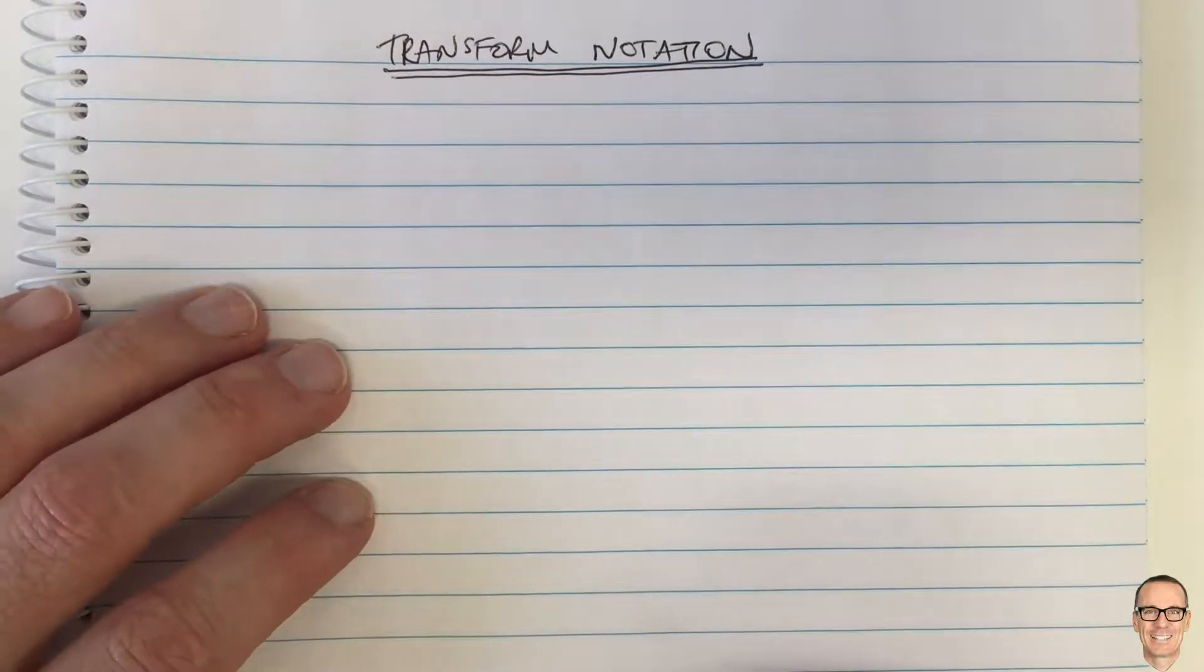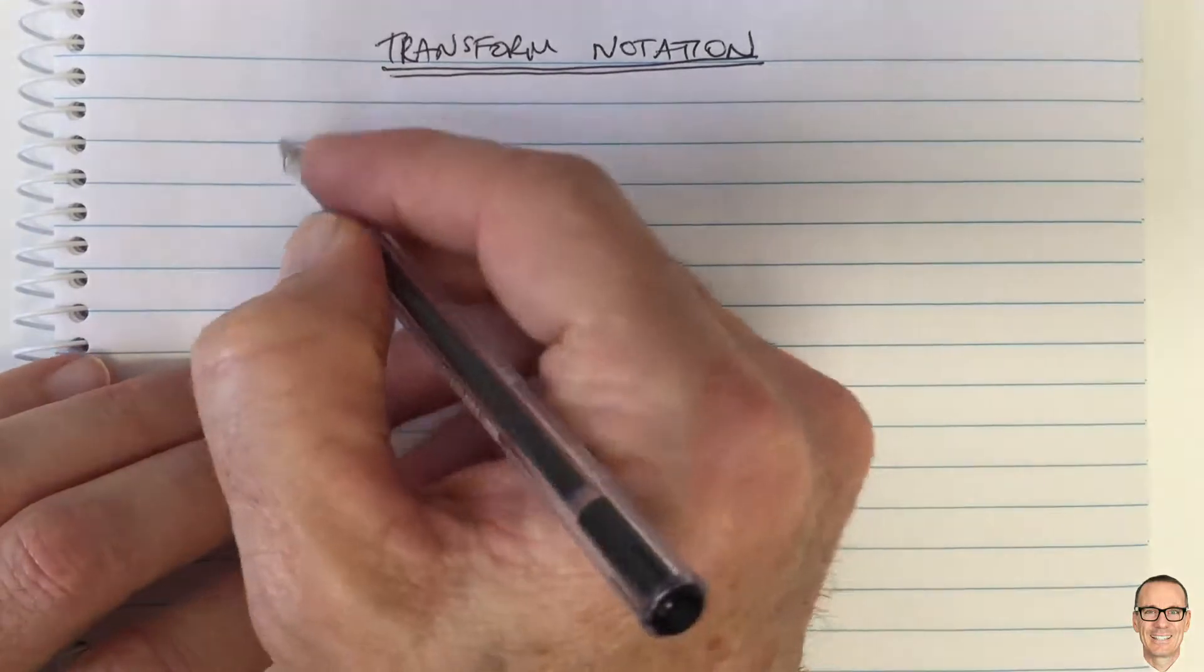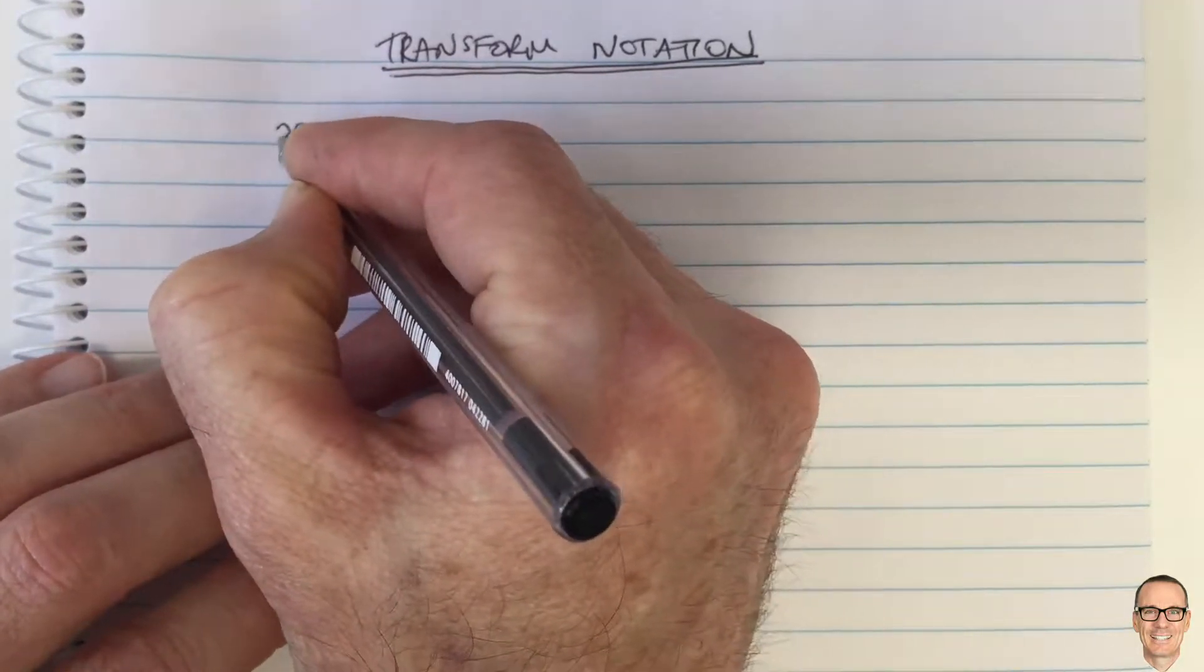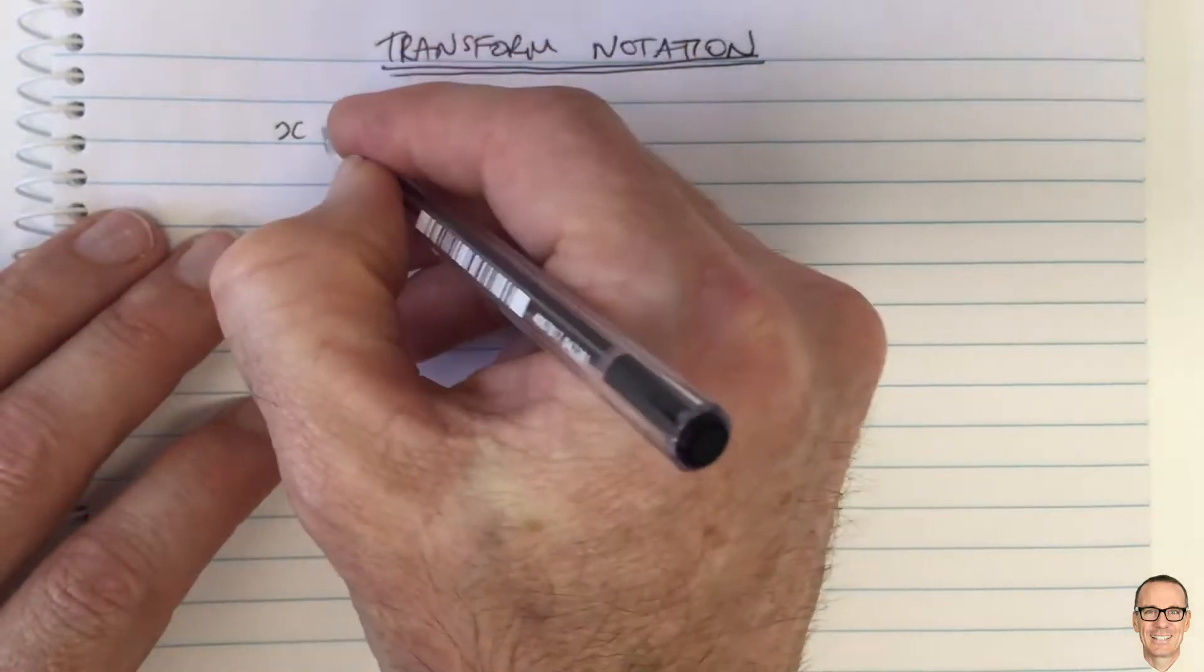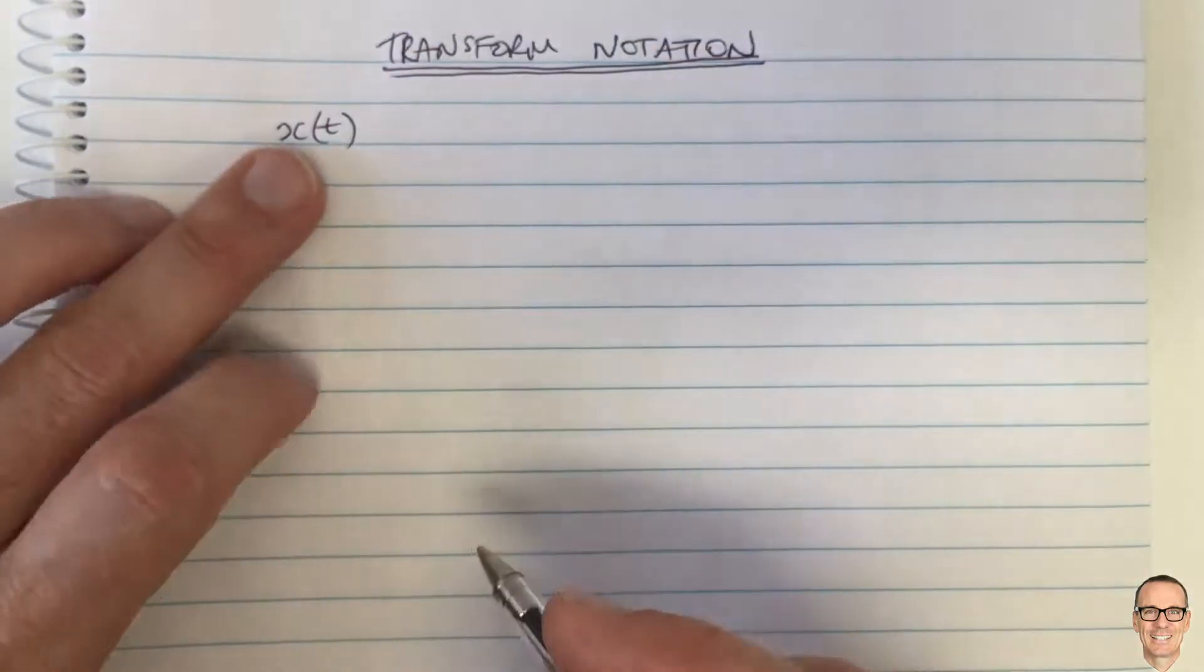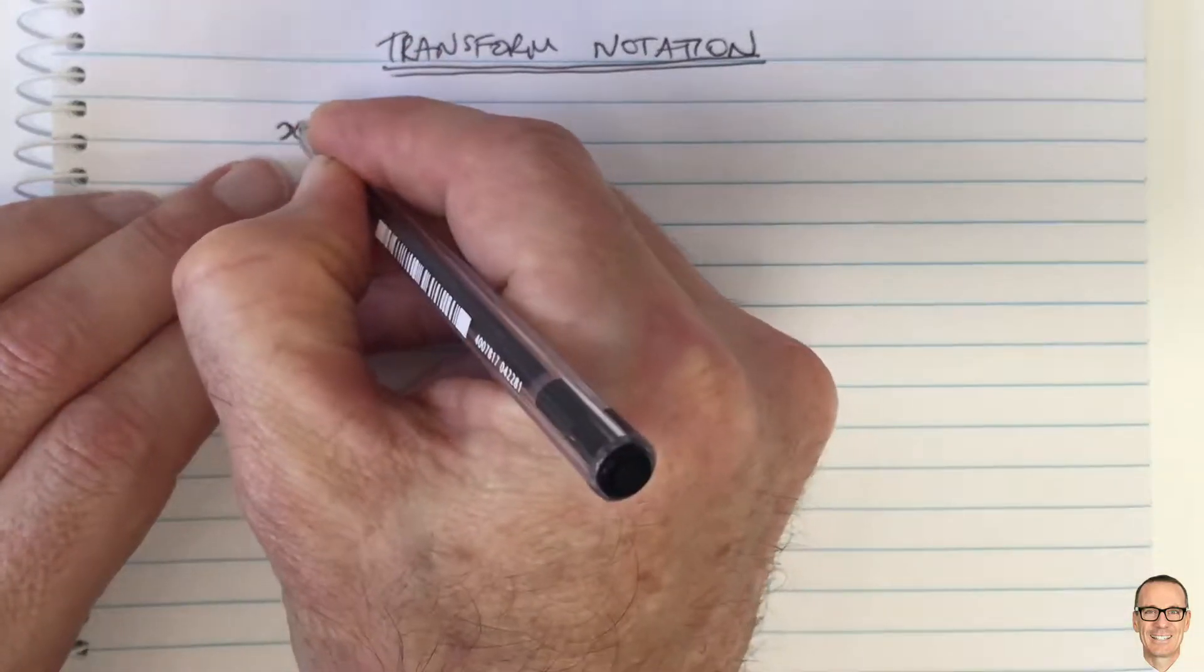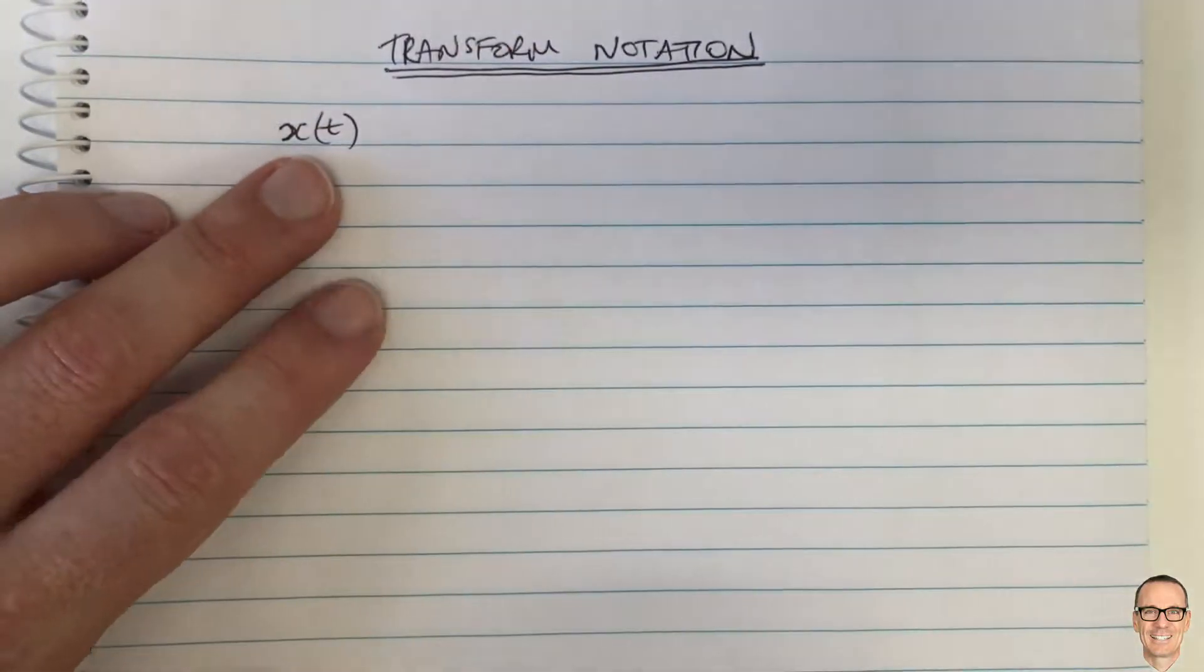Okay, I'm just going to explain some common notation in signals and systems because sometimes it's confusing. So we use little characters for signals that are in the time domain. So x of t, little x of t, tells us that it's a time domain signal.